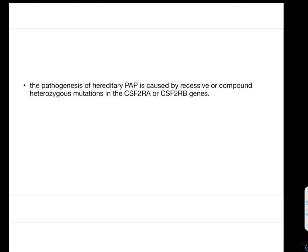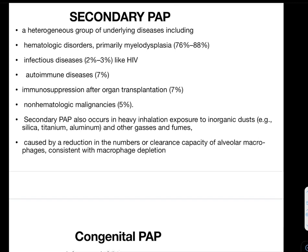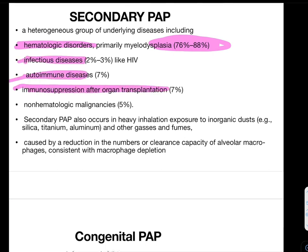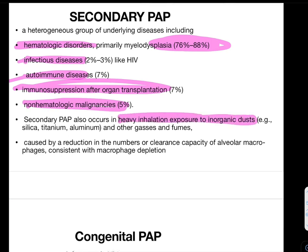Hereditary PAP is caused by recessive mutations in the CSF2RA and CSF2RB genes. Secondary PAP is a heterogeneous group including hematologic disorders (primarily myelodysplasia, accounting for 76 to 88% of cases), infectious diseases like HIV, autoimmune diseases, immunosuppression after organ transplant, and non-hematological malignancies. Secondary PAP also occurs with heavy inhalation of inorganic dust like silicosis, titanium exposure, aluminium exposure, or other gases and fumes.